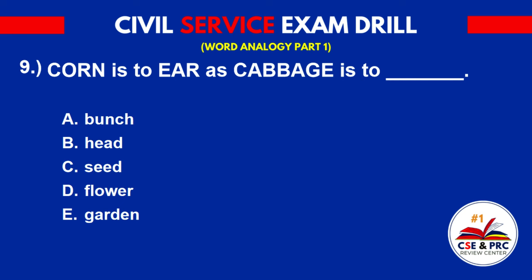Number 9: 'Corn' is to 'ear' as 'cabbage' is to blank. A. Bunch. B. Head. C. Seed. D. Flour. E. Garden. The answer is B. Head.